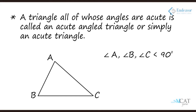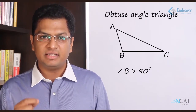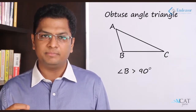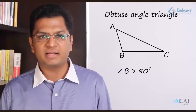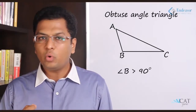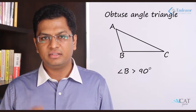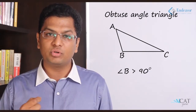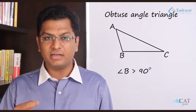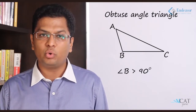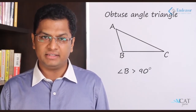A triangle whose all the angles are acute — acute meaning less than 90 degrees — is called an acute angle triangle. If one of the angles is more than 90 degrees, then it is called an obtuse angle triangle. Since the sum of all angles in a triangle is 180 degrees, two angles cannot both be more than 90 degrees, as the sum of those two would already exceed 180 degrees. Hence in an obtuse angle triangle only one angle can be more than 90 degrees.